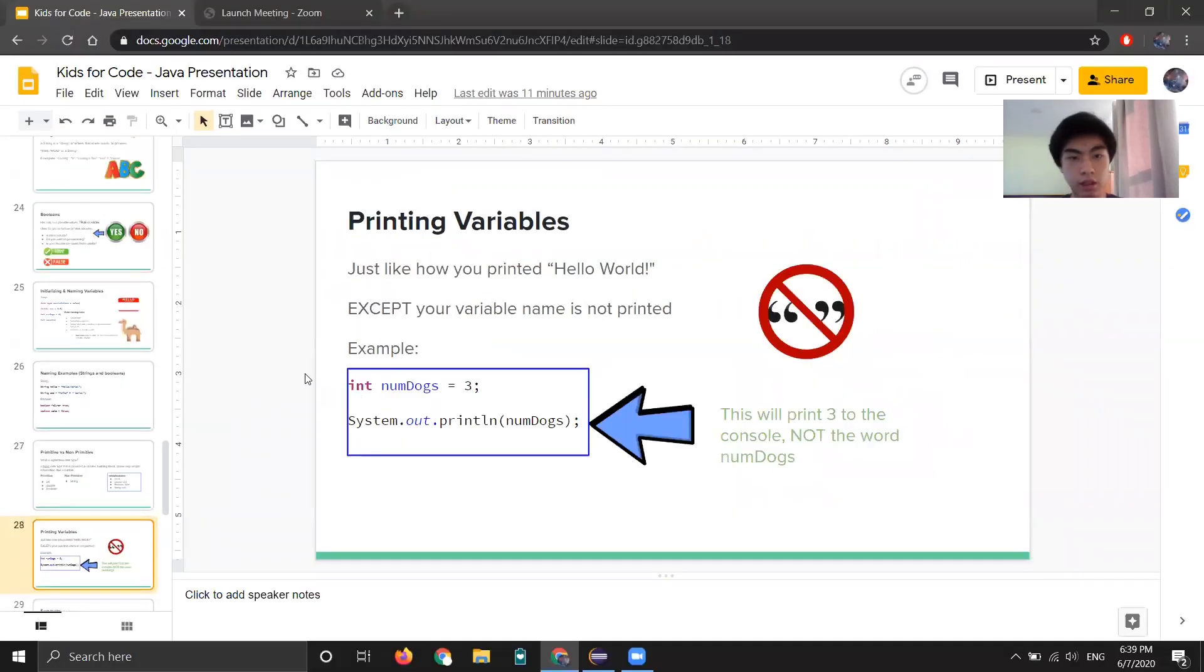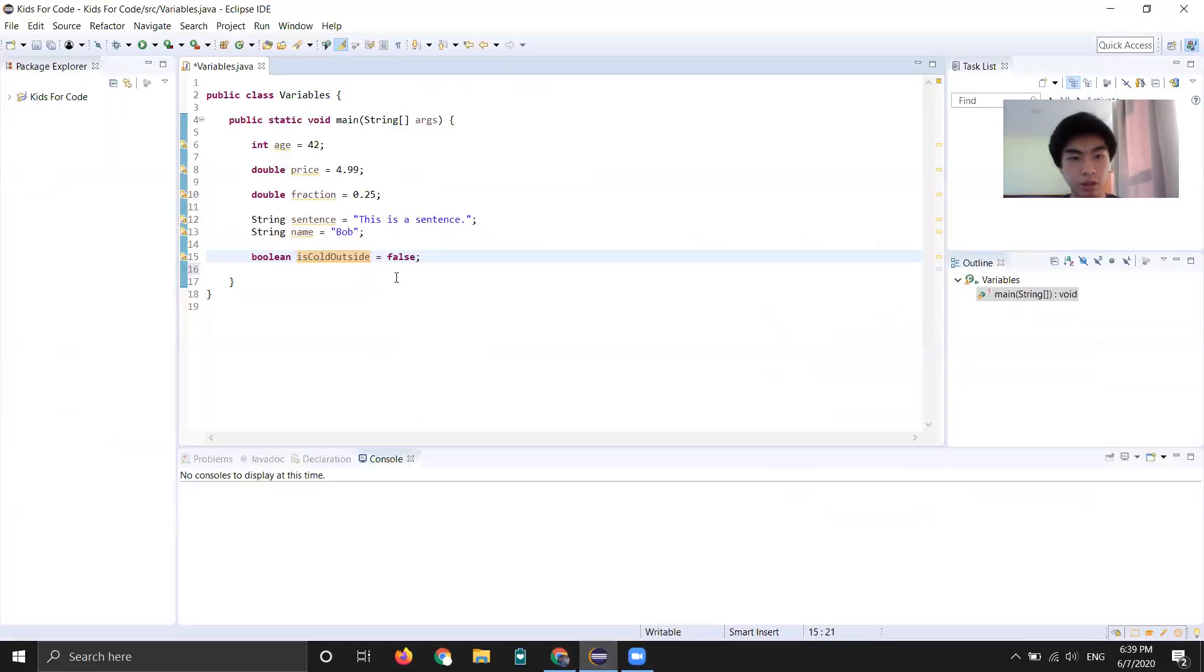Okay, and now we can get into printing variables. So we can print any of these four types of data here with a simple print statement. So in order to print a variable, put the variable name in the print statement. That's it. No quotes, no single quotes, double quotes, none of that, just the variable name.